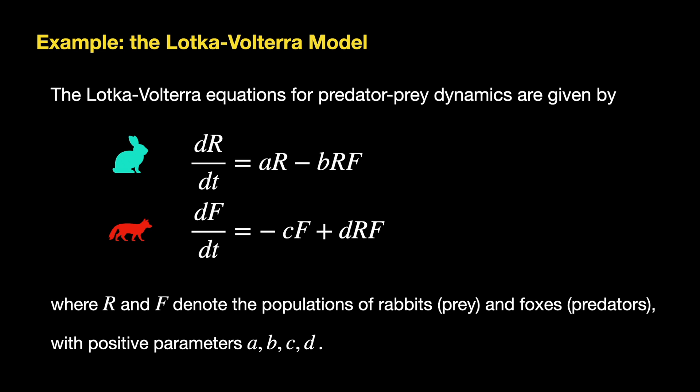So here are those equations. We will use capital R for the prey, you can think of those like rabbits, and capital F for the predators, so those will be foxes. The first equation describes the rate of change of the prey population over time, and the second describes the rate of change of the predators over time.